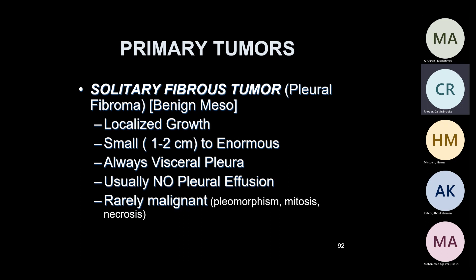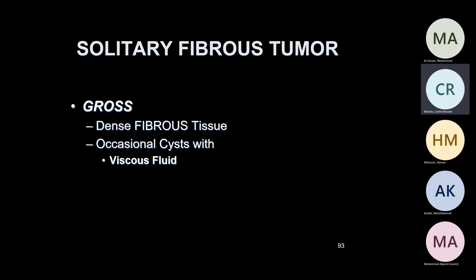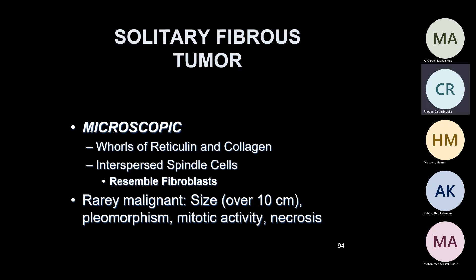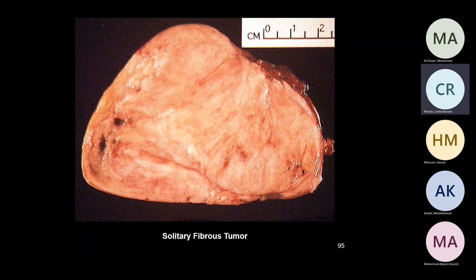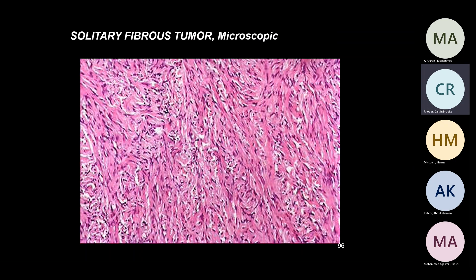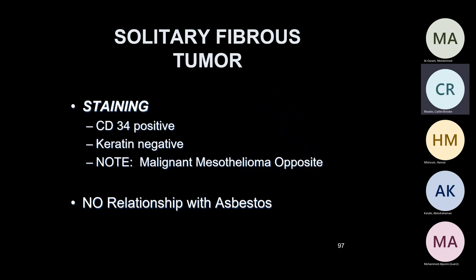Solitary fibrous tumor is actually quite common — based on the pleura, these are benign tumors, also known as benign mesothelioma, but don't use that term. It can be small to large, always distal pleura, usually no pleural effusion, and is rarely malignant. You see wiry reticulum and collagen with spindle cells. The main differential diagnosis is malignant mesothelioma. Staining-wise, solitary fibrous tumor stains positive for CD34 — a basal cell marker — and keratin is negative. Whereas malignant mesothelioma keratin is positive, and it also stains for calretinin.